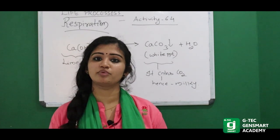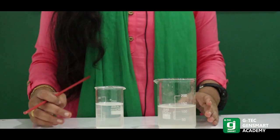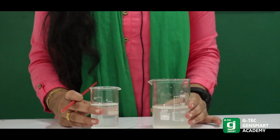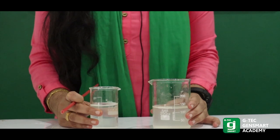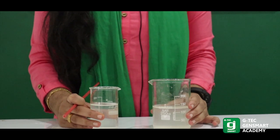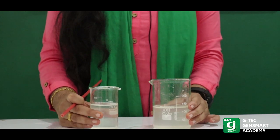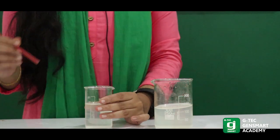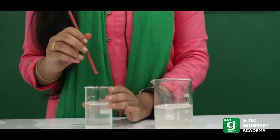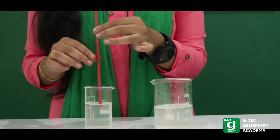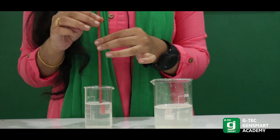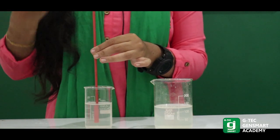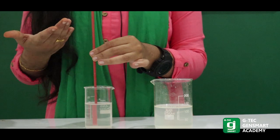Now we are going to prepare the experiment. Here we have calcium hydroxide solution — that is, freshly prepared lime water — in two beakers. In the first beaker, we use a straw. Just blow it. We will be giving out carbon dioxide.